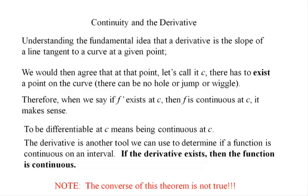We agree that at some point — here we're calling it C — there has to be an output on the curve. There can't be a hole or a jump or a wiggle. Therefore, when we say F prime exists at C, F has to be continuous at C. The only way that the derivative can exist at some input value on a function is for the function to be defined there.